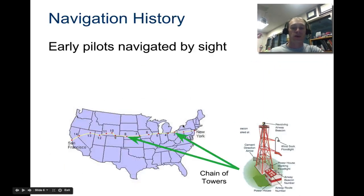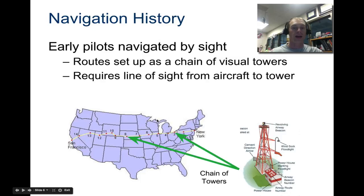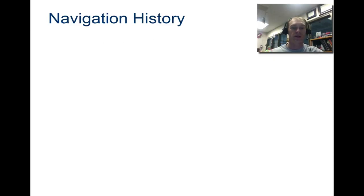Next we get into using chains of towers. Early pilots navigated by sight, setting up routes based on a chain of visual towers and following from tower to tower. You had to have line of sight between towers, so clouds, dust, or storms made it very difficult. Early piloting was a rather dangerous endeavor.